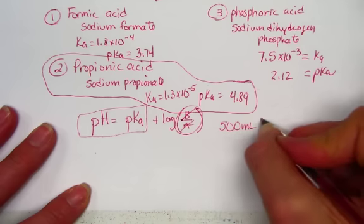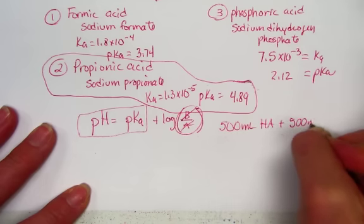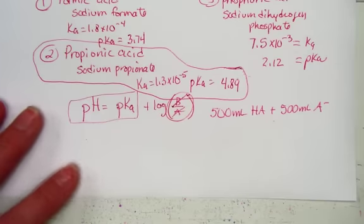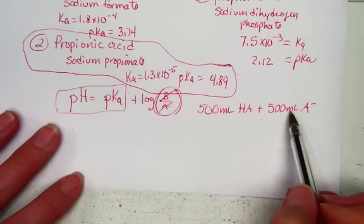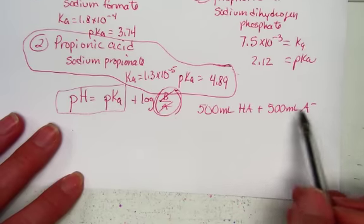500 mL of the acid plus 500 mL of the conjugate base will deliver the same number of moles per liter of acid and base.